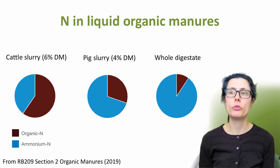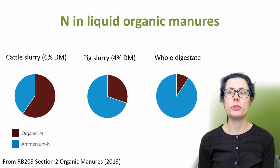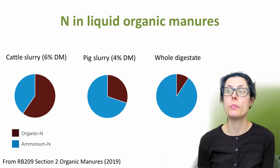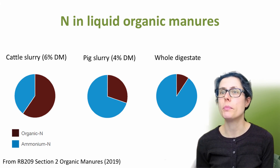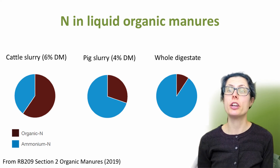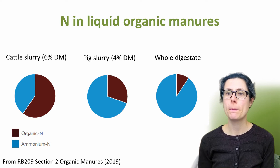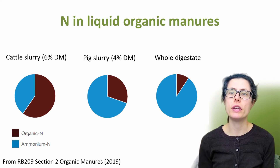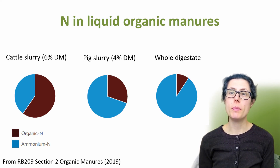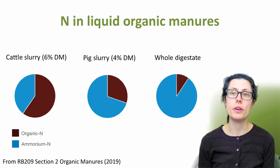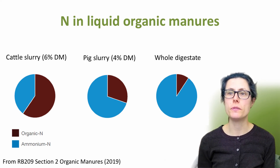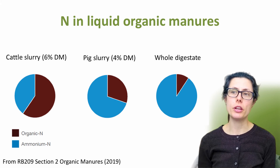This slide shows approximate proportions of ammonium nitrogen in liquids, shown in blue. This is taken from the UK's RB209 fertiliser manual. There are increasing amounts of ammonium from cattle slurry on the left and then pig slurry, with digestate from anaerobic digestion generally having higher quantity of ammonium than animal slurries. All three liquid organic manures here have relatively high levels of available nitrogen, usually 35 to 70%. The remainder of nitrogen is organic N, shown in brown, and is less available than ammonium nitrogen. Any organic material with over 30% readily available nitrogen cannot be applied during specified times during winter months, especially in farms within nitrate vulnerable zones in the UK.